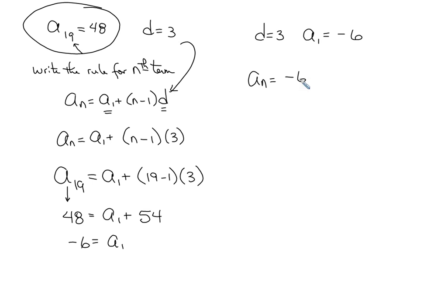an is equal to a 1 plus n minus 1 times d. Now I replace the two things I need to replace. Now I just have to simplify. So the rule is that an equals negative 6 plus 3n minus 3 which gives us an is equal to 3n minus 9. There's the rule for our nth term. So sometimes they give you d and they give you one term you can find what you're missing this way by plugging that one term in. Questions about that?